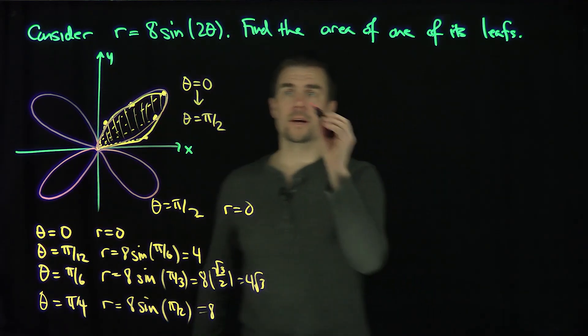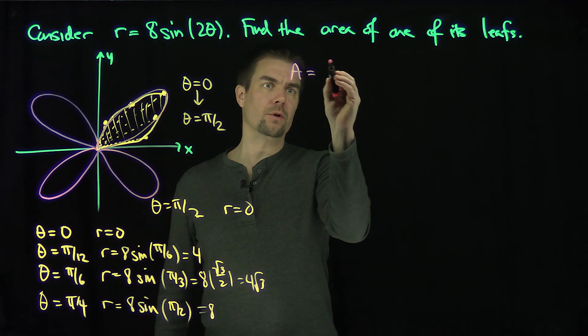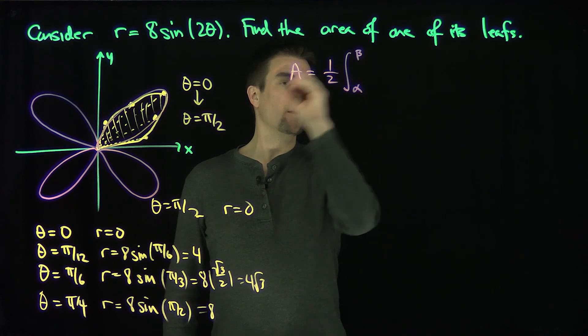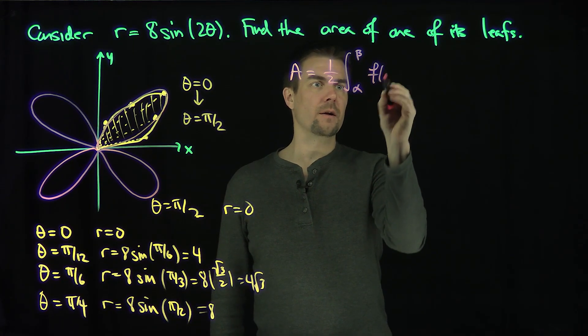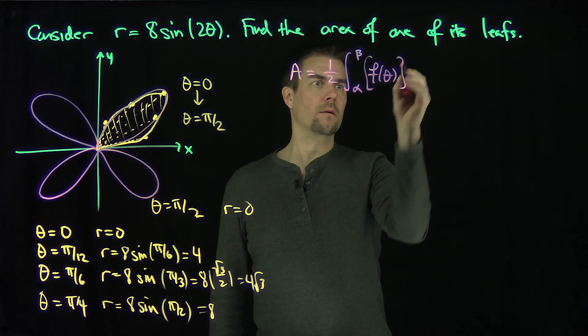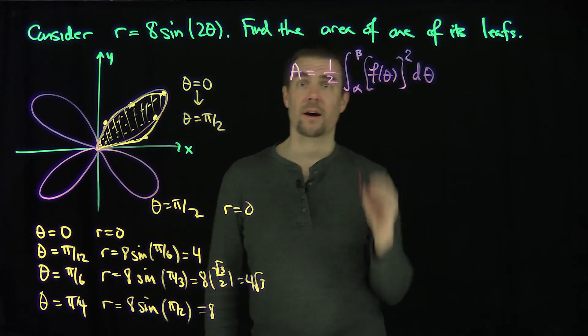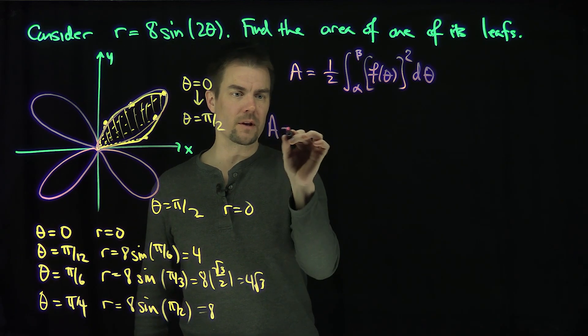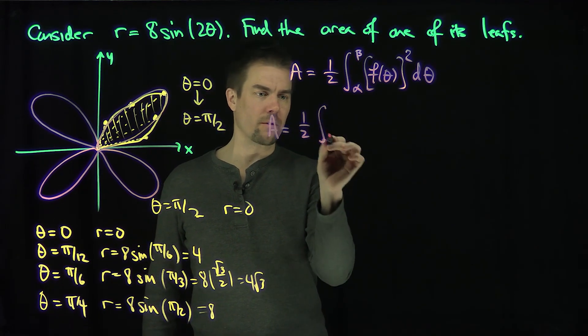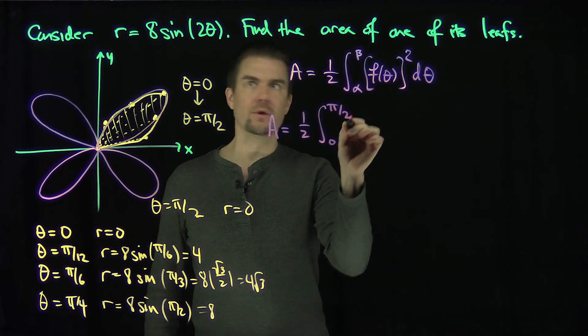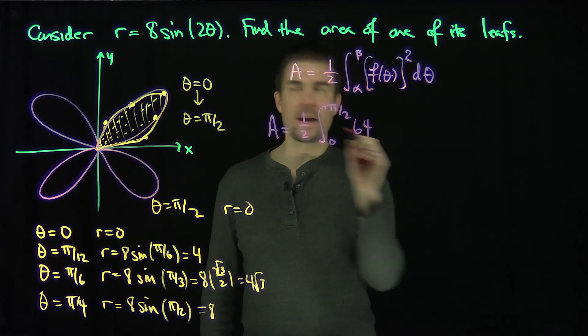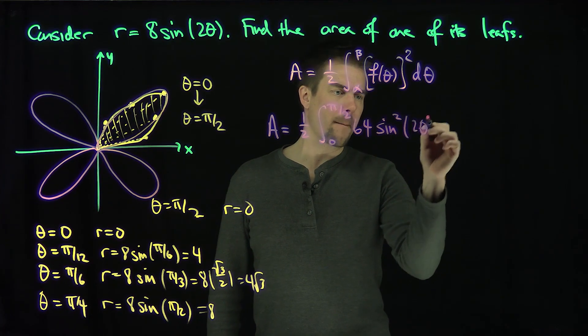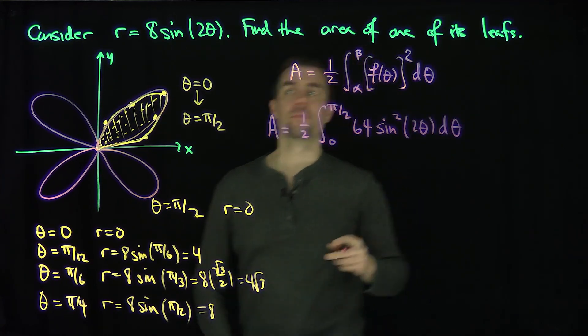So recall the polar formula area. The area formula in polar coordinates is one half the integral from alpha to beta of f of theta squared d theta. So let's compute this integral. So our area of this leaf, the area of one leaf, is one half the integral from 0 to pi over 2. Then I'm going to square this function. I get 64, because 8 squared is 64, then sine squared of 2 theta d theta.